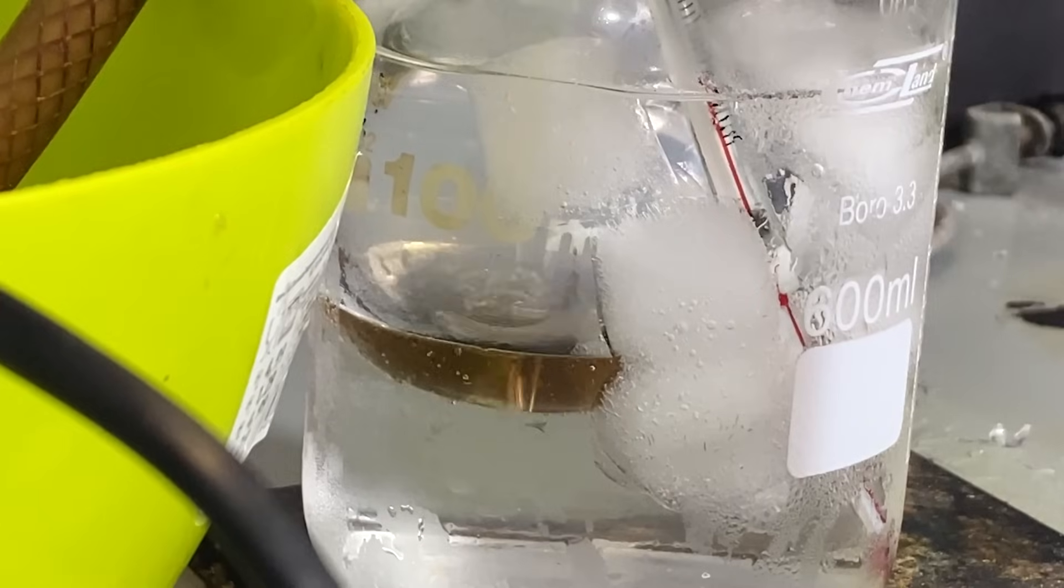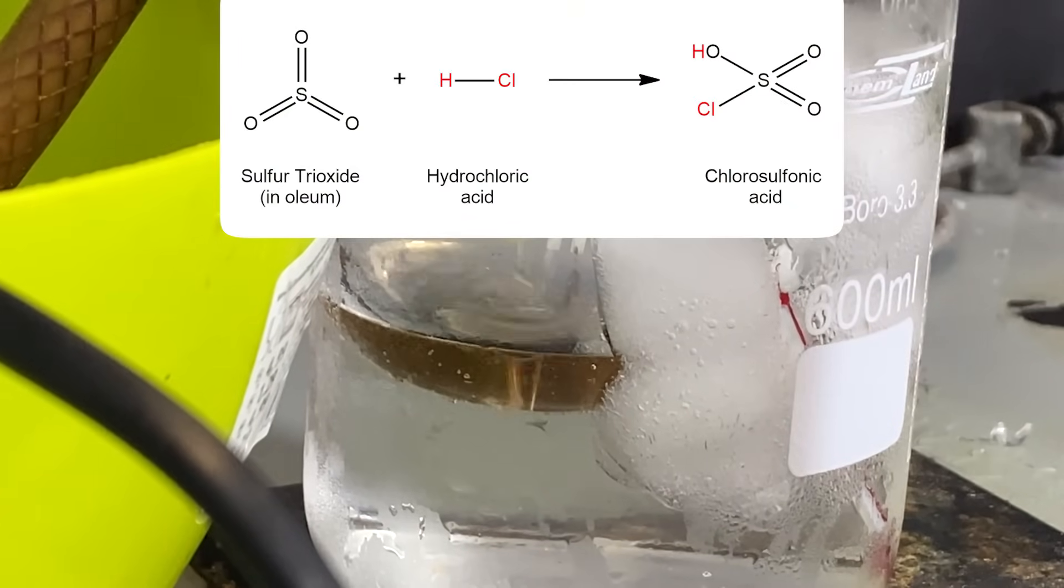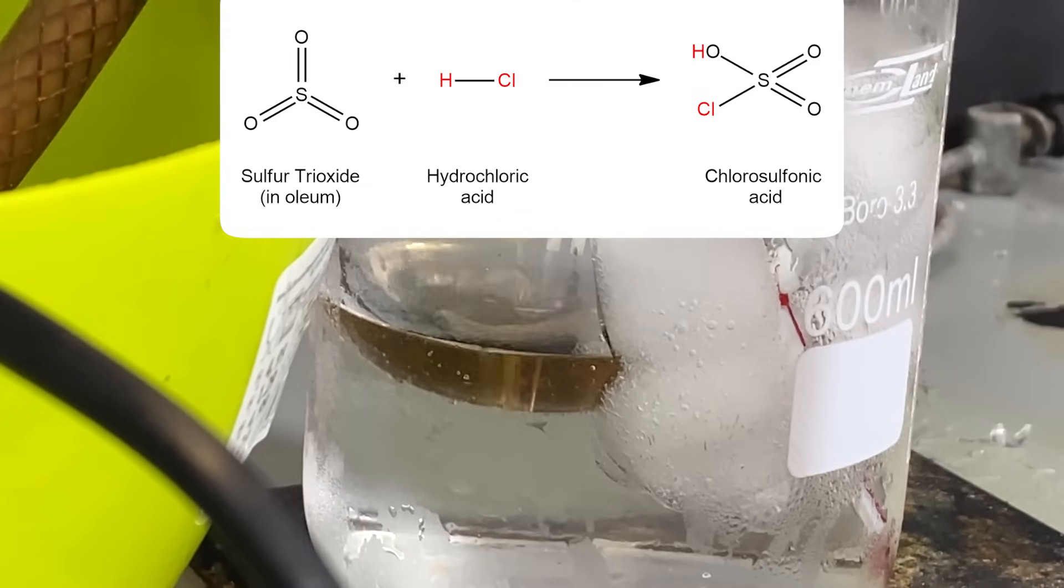And you can almost immediately see a dense white fog over the oleum. In this reaction, we are basically combining the SO₃, which is dissolved in the sulfuric acid, with HCl to form chlorosulfonic acid.